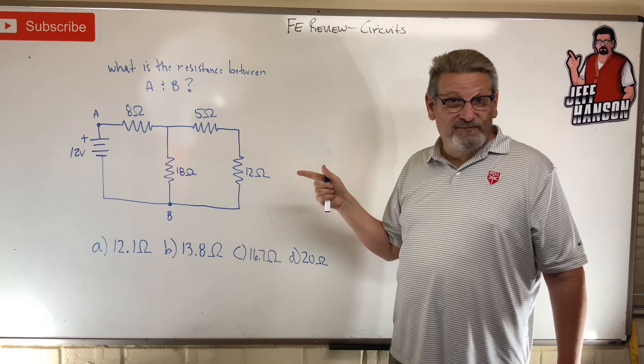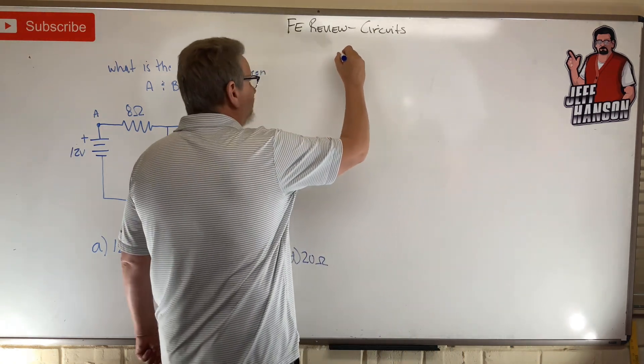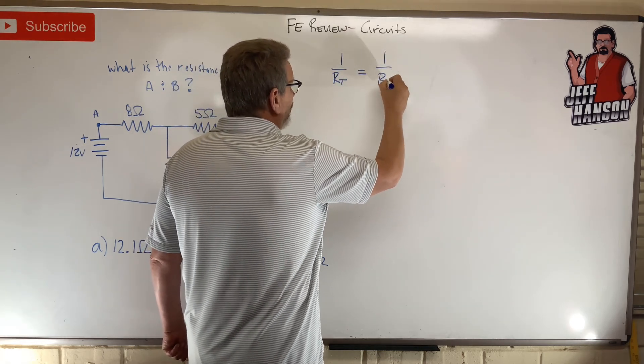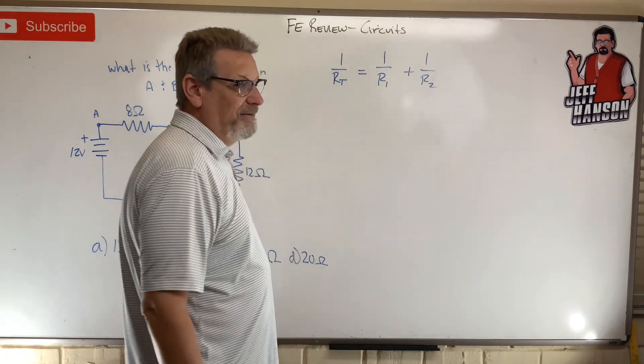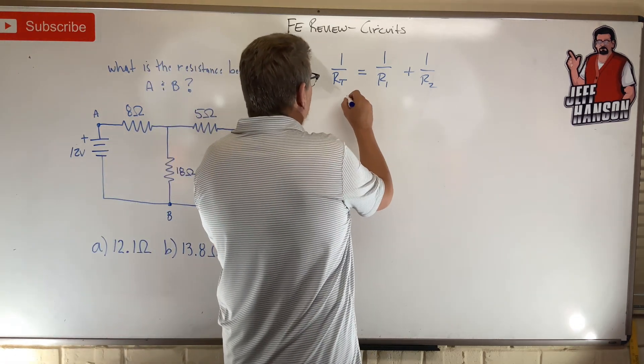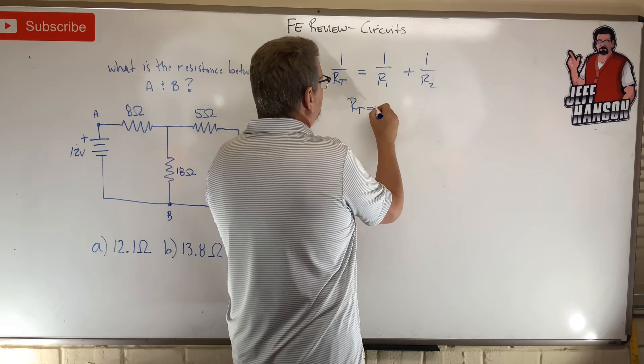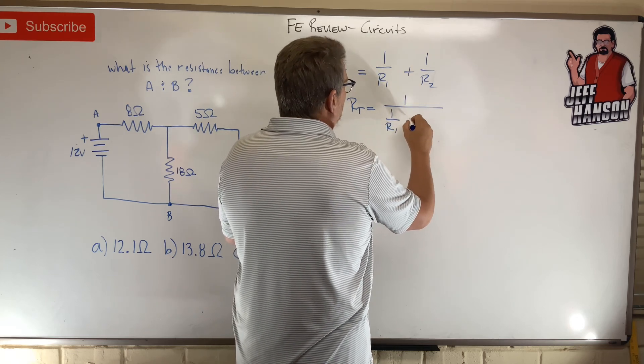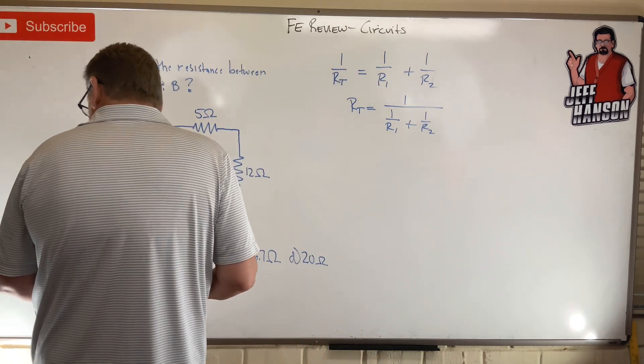All right, are you back? We've got to remember parallel circuits. For parallel circuits, one over resistance total is equal to one over R1 plus one over R2, and however many you have. In this case we have two parallel circuits. So RT, you have to do the inverse of this, so RT turns out to be one over (one over R1 plus one over R2). Here we go.